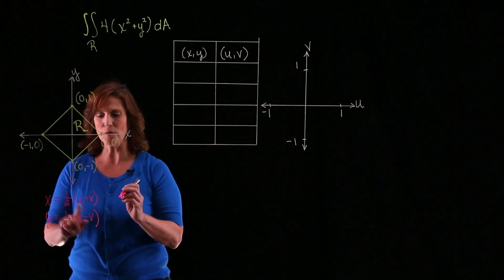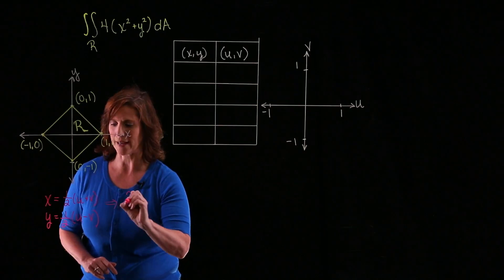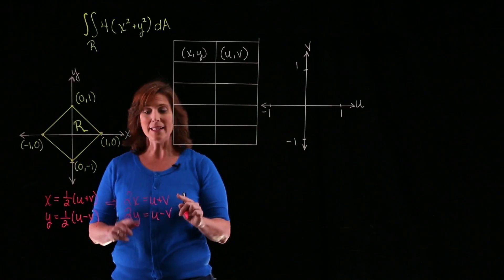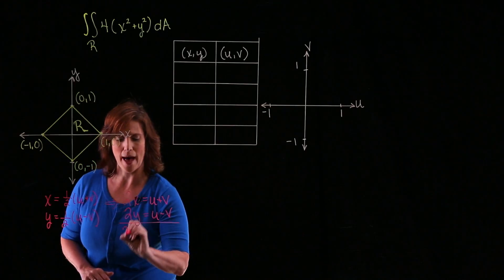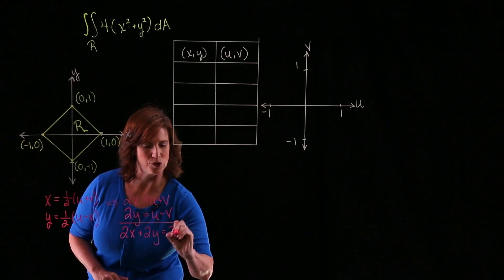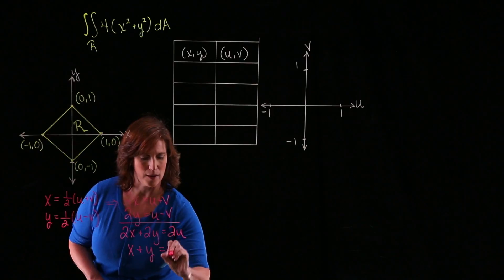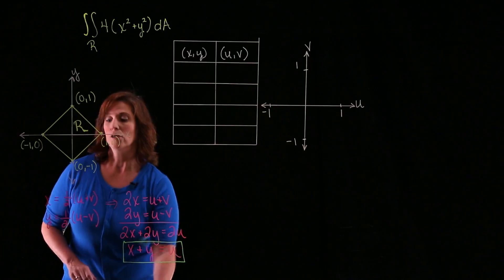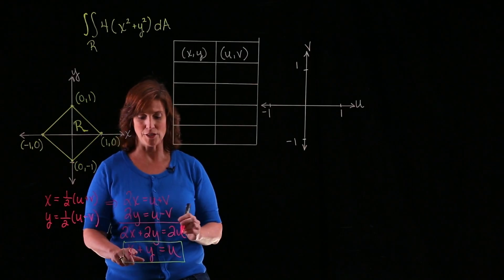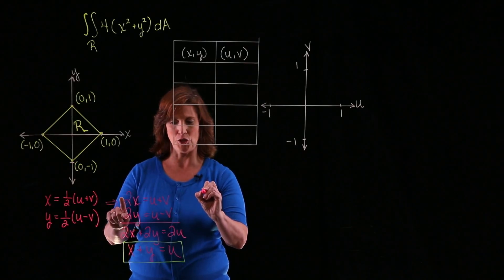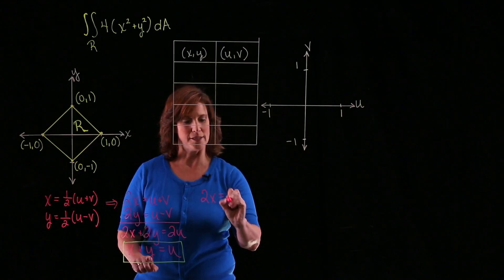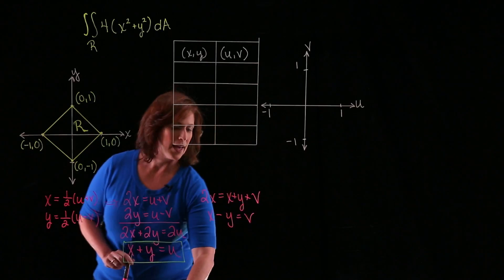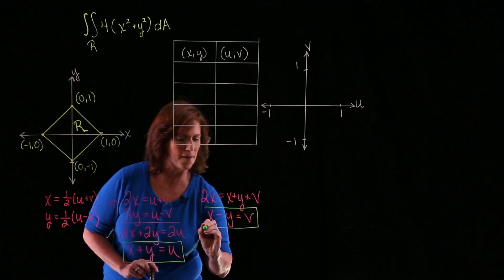I'm going to rewrite this transformation as 2x equals u plus v, and 2y equals u minus v. Adding these two equations together, I get 2x plus 2y equals 2u, or x plus y equals u. That gives us a way to express u in terms of x and y. Plugging back into the first equation: 2x equals u, which is x plus y plus v, so x minus y equals v.